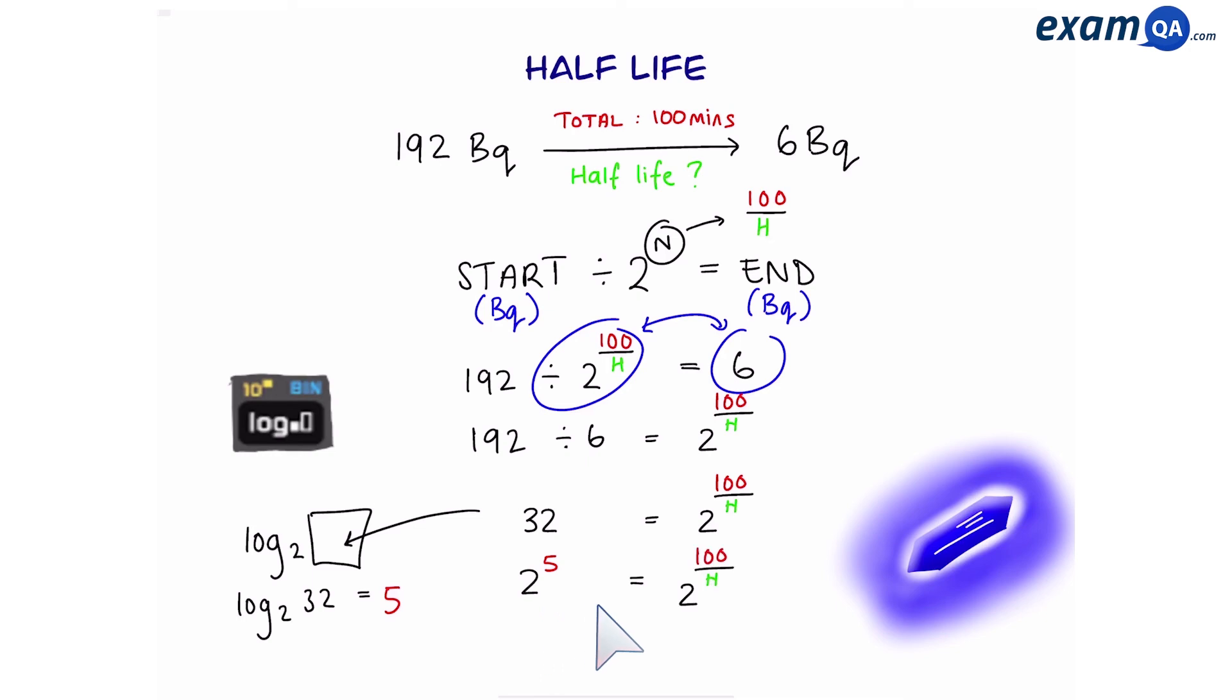So that means 32 can also be written as 2 to the power of 5, which equals 2 to the power of 100 over h. That means we can cross out the bottoms and compare the powers. So 5 equals 100 over h. Then swap these around to make h the subject. h equals 100 over 5. And that gives you 20 minutes. So remember, this kind of question is going to be a little bit more tricky than the other two previous ones.